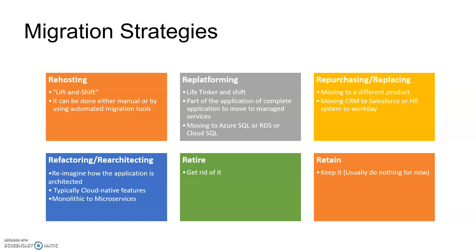For example, if you have 30 servers on-premises and you want to add 30 more servers but you don't want to spend on the on-premises infrastructure, then you can add those 30 servers on one of the cloud systems using either manual or automated migration tools.